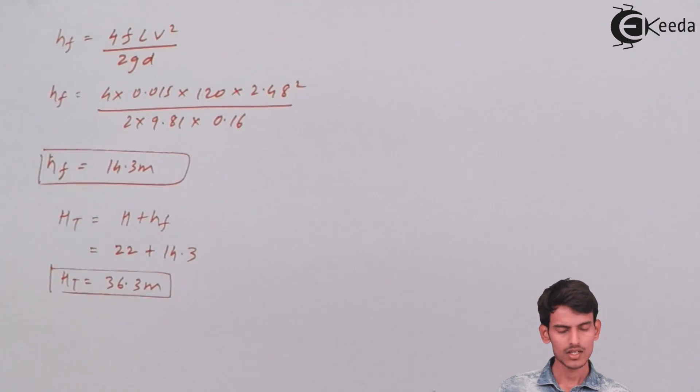The total head is 36.3 meters. Now let's use the overall efficiency formula and we can get the value of shaft power.